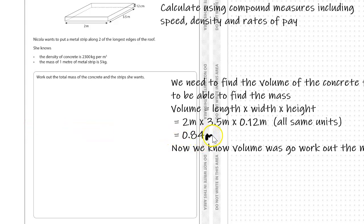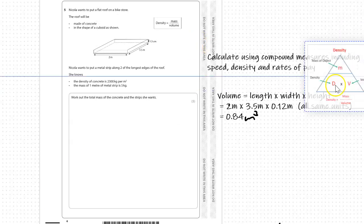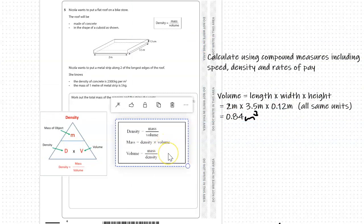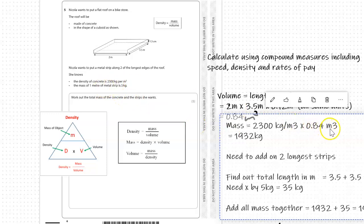That gives us 0.84 metres cubed — the units for volume are metres cubed. Now, mass equals density times volume. We know the density and we know the volume, so: 2300 (the density) times 0.84 metres cubed gives us a mass of 1932 kilograms. The units associated are kilograms, so we've got to that point.